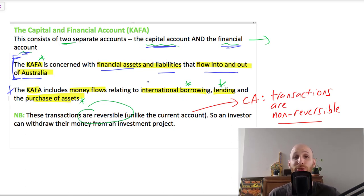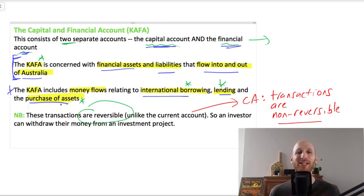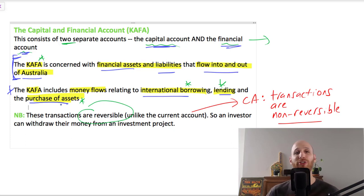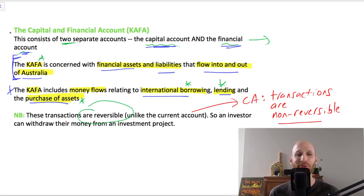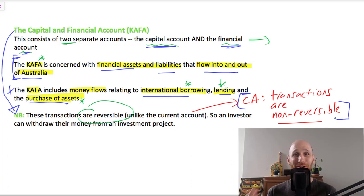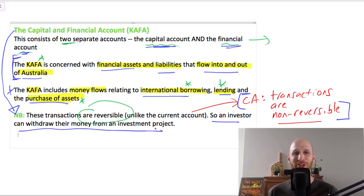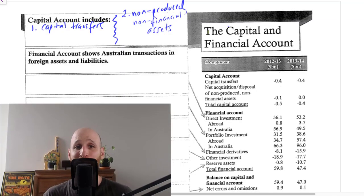The capital and financial account consists of money flows relating to international borrowing, lending, and the purchase of assets. An important distinction from the current account is that transactions in the capital and financial account are reversible — they can be undone. For example, an investor might decide to withdraw their money from an investment project, thereby undoing that transaction.